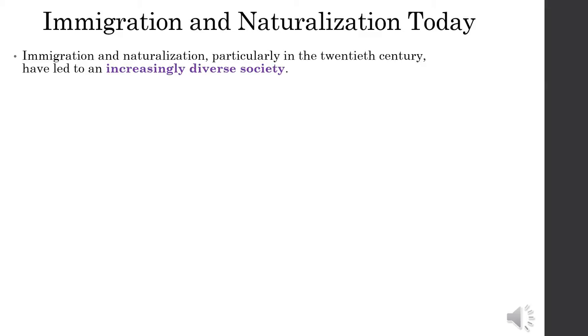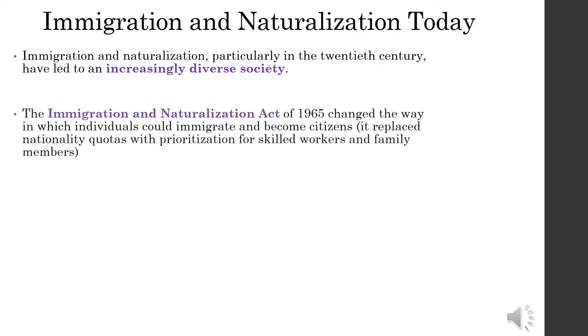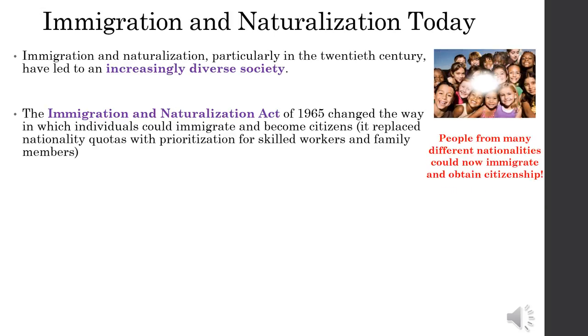People are either born as American citizens or they become naturalized American citizens. We still need to talk about immigration and naturalization in America today. Immigration and naturalization, particularly in the 20th century, has led to an increasingly diverse society. The Immigration and Naturalization Act of 1965 changed the way in which individuals could immigrate and become citizens. It replaced nationality quotas with prioritization for skilled workers and family members, meaning people from many different nationalities can now immigrate and obtain citizenship.